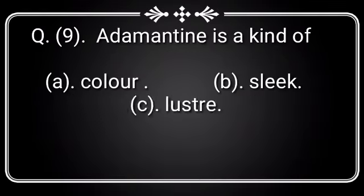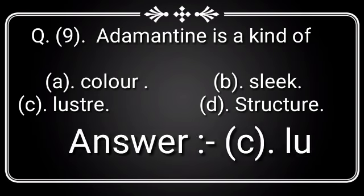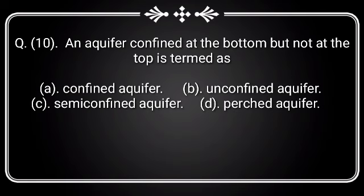Question 9: Adamantine is a kind of — Option A: Color, Option B: Streak, Option C: Luster, Option D: Structure. Answer is Option C: Luster.